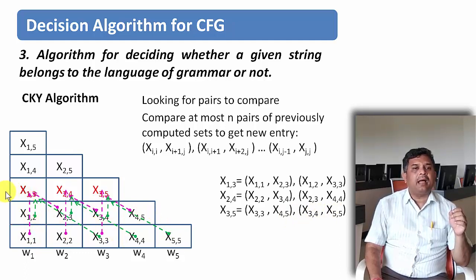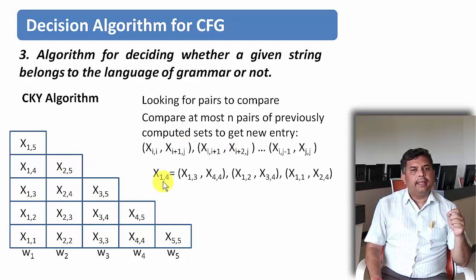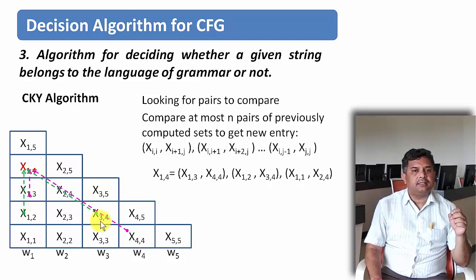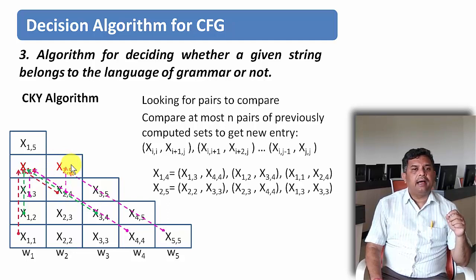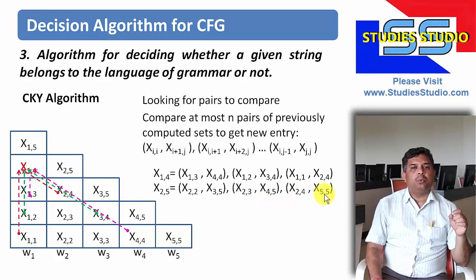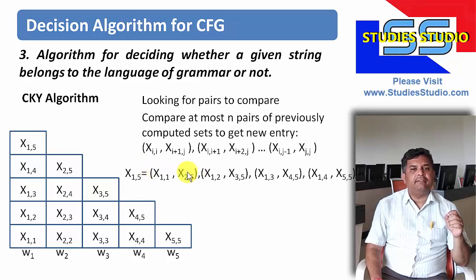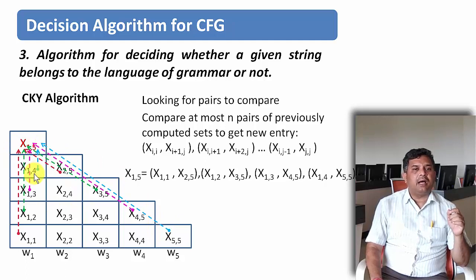Using this formula to fill row 4: for X14, we take X13 and X44, union X12 and X34, union X11 and X24. For X25, we take X22 and X35, union X23 and X45, union X24 and X55. For the last row, X15, we take the pairs: X11 and X25, then X12 and X35, then X13 and X45, and finally X14 and X55.